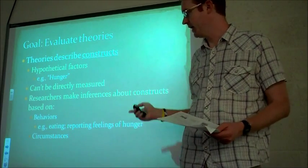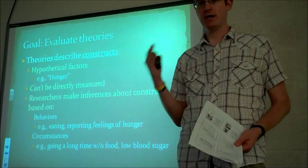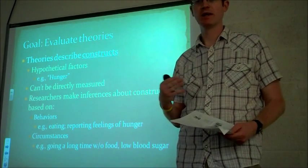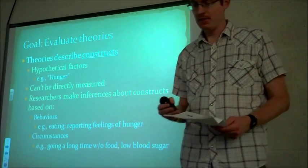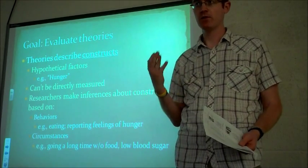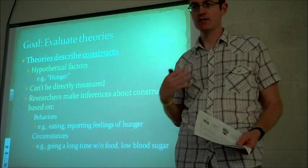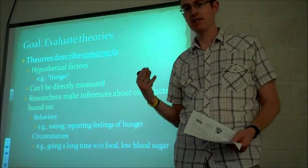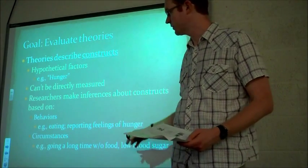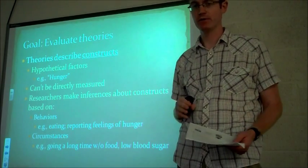Those are examples of behaviors that could reflect feelings of hunger. Circumstances would be things like if somebody has gone a long time without eating food — say 12 hours without eating anything — that is a circumstance under which you would expect a person to have feelings of hunger. Another example is measuring somebody's blood sugar. When somebody's blood sugar drops down, they have psychological feelings of hunger and are motivated to get the nutrients they need to maintain homeostasis. These are specific things we could measure to make an inference about how hungry the person is, even though we're still not directly measuring the abstract factor of hunger.